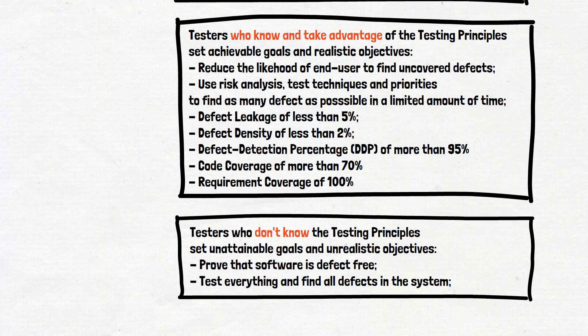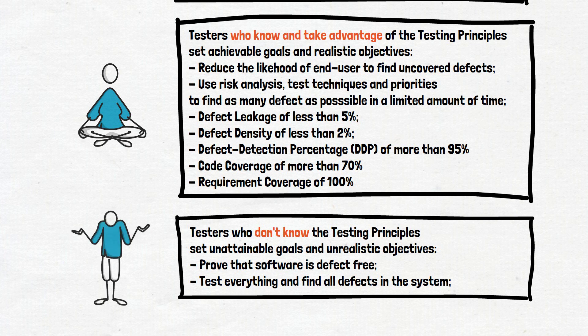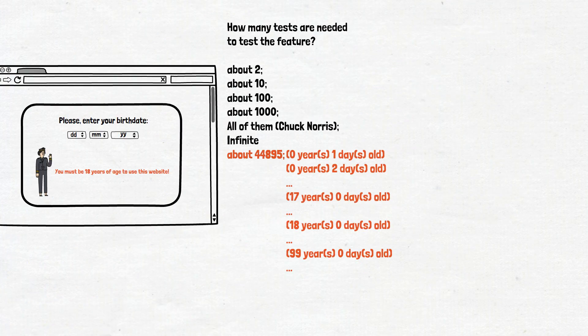Earlier in previous videos we provided the list of differences between testers who know and take advantage of the testing principles and testers who don't know or ignore the testing principles. In that list you can find the answer: testers should use risk analysis, test techniques, and priorities to find as many defects as possible in a limited amount of time. You can pause the video and read the full list if it's new to you.